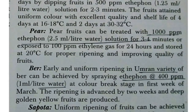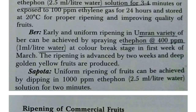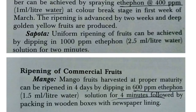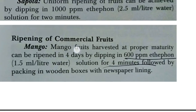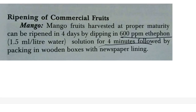For ethephon (the source of ethylene gas): about 1000 ppm ethephon, mixing 2.5 ml in 1 litre of water, releases about 100 ppm of ethylene for 24 hours. The ethephon dose for Ber is about 400 ppm, for Sapota about 1000 ppm, and for Mango about 600 ppm.